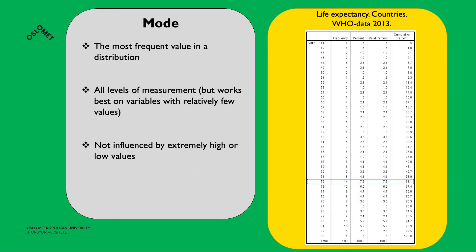The mode is the most frequent value in the distribution. In our example, that's 72 years, because 14 countries have a life expectancy of 72, which is the highest frequency — no other value has the same count. The mode can be used at all levels of measurement but works best on variables with relatively few values.